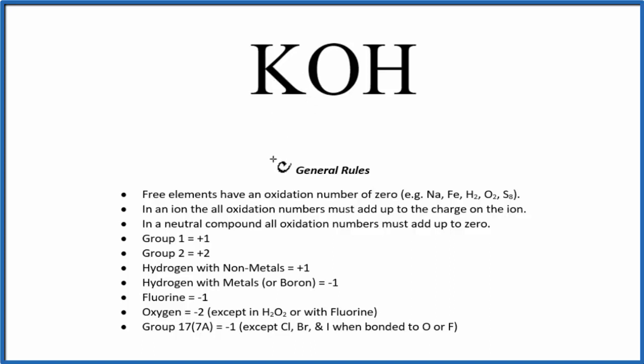On the periodic table, potassium is in group 1. Elements in group 1 have an oxidation number of +1, so potassium has an oxidation number of +1.